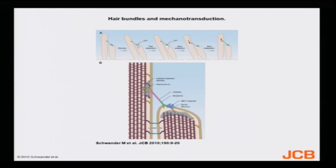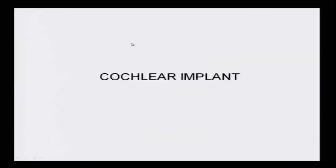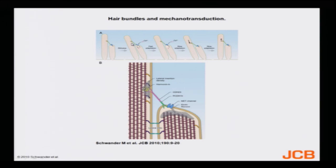Coming back — these are the hair bundles and the mechanotransduction taking place. When there is a stimulus they move in one direction; all move towards the left, the calcium channels are pulled open, and then there is adaptation and they return to their original position. If you follow this diagram carefully, the whole mechanotransduction process will be very clear.